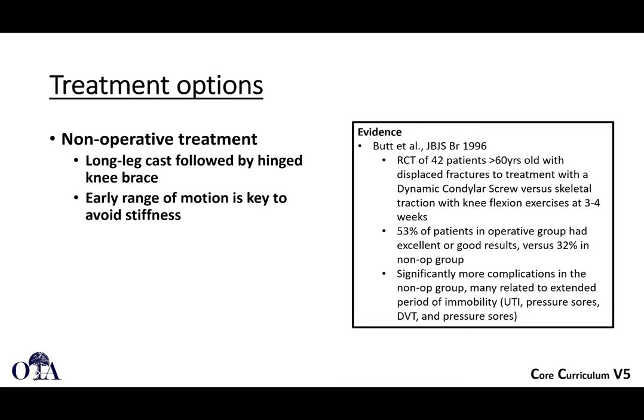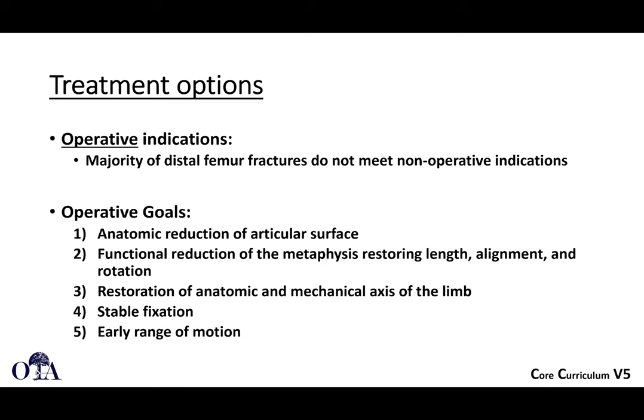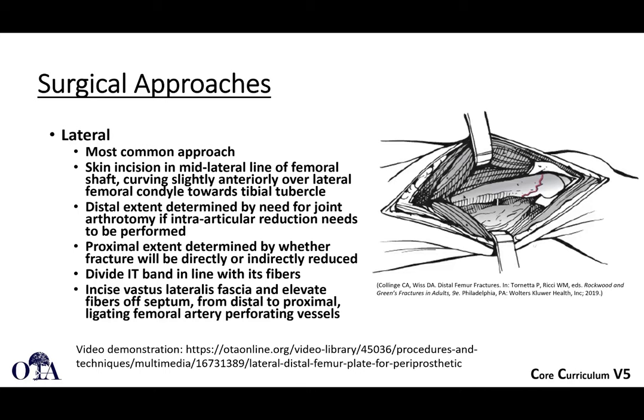Evidence from a 1996 JBJS randomized controlled trial showed operative management works better for these fractures. The majority of distal femur fractures require operative management with goals of restoring anatomic reduction of the articular surface, functional reduction of the metaphysis for length, alignment, and rotation, restoring mechanical and anatomic axis, achieving stable fixation, and allowing early range of motion — the AO basic principles — with attention to soft tissue preservation.